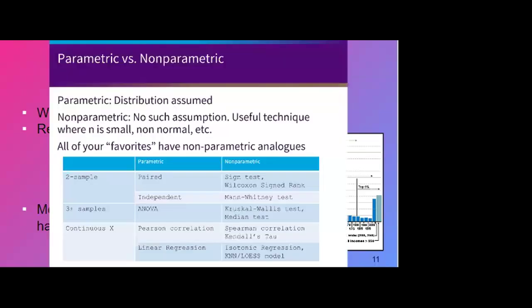So every test we have has a nonparametric analog. So things like t-tests, things like ANOVA, things like linear regression, even more complicated tests, logistic regression, all those kind of things have nonparametric analogs. And so from that, we really can figure out what's going on and what we're doing with that.